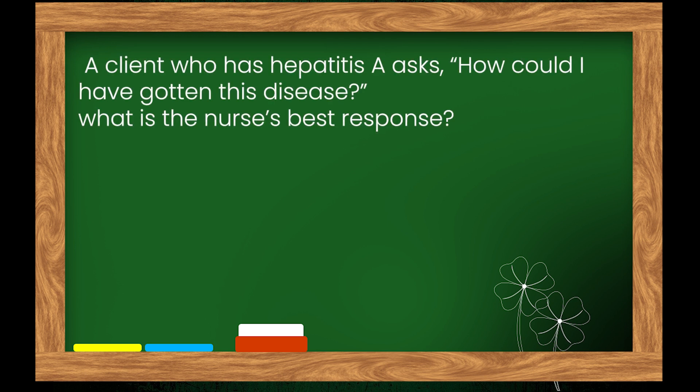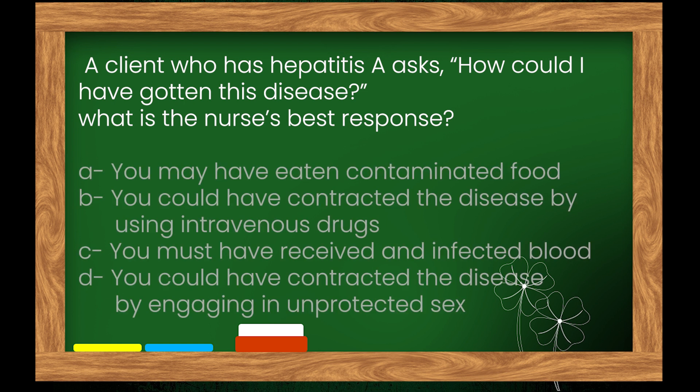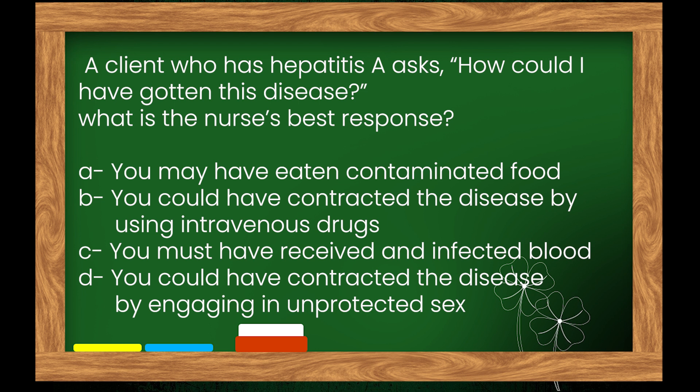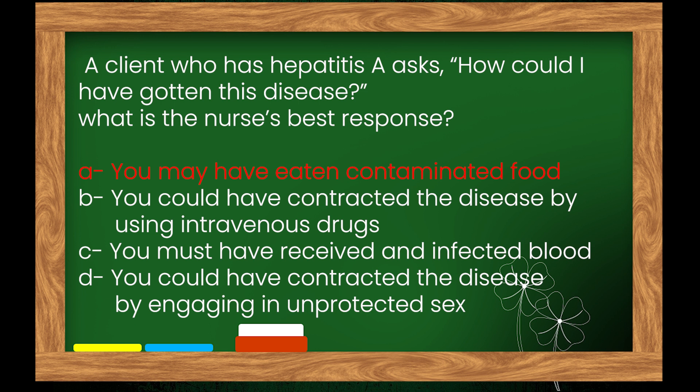Question 11: A client who has hepatitis A asks, 'How could I have gotten this disease?' What is the nurse's best response? Options: A. You may have eaten contaminated food, B. You could have contracted the disease by using intravenous drugs, C. You must have received infected blood, D. You could have contracted the disease by engaging in unprotected sex. The right answer is option A: you may have eaten contaminated food.